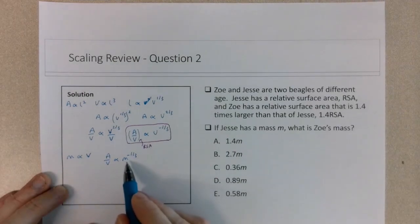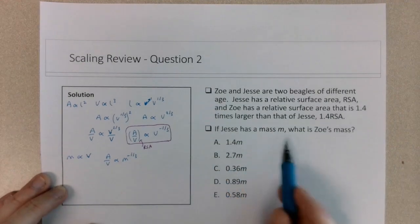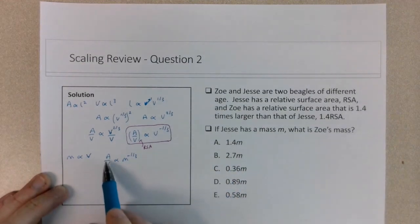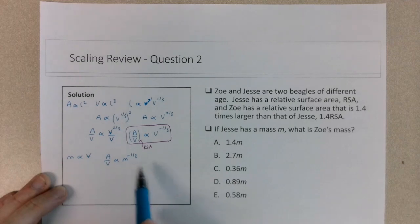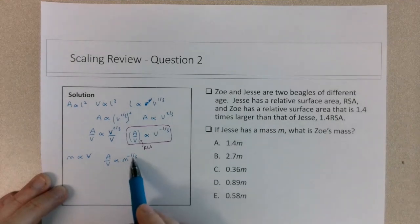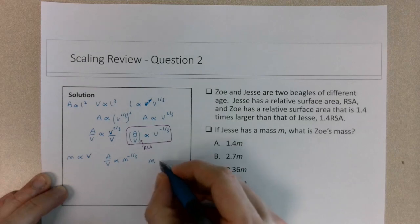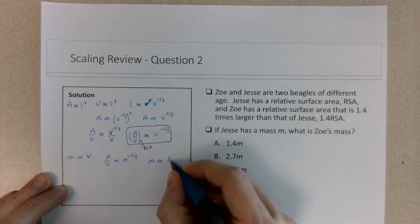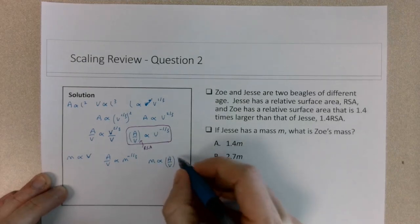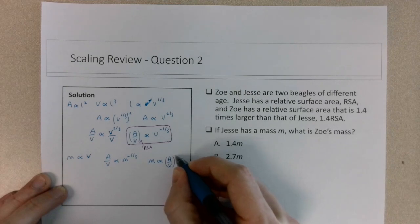And then if I want to write mass in terms of A over V, because this is an expression for the relative surface area in terms of mass, but I want an expression for how does the mass change with relative surface area. So I'd raise both sides here to negative three. And that would give us mass to the power of one changes with relative surface area to the negative three.